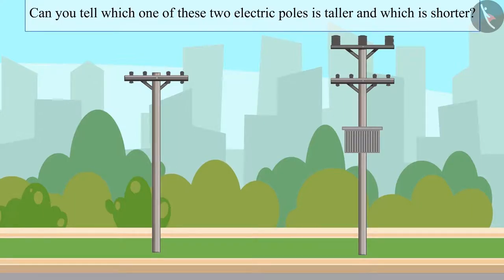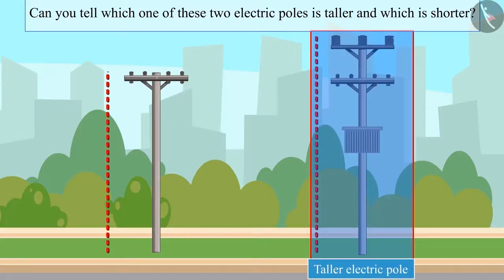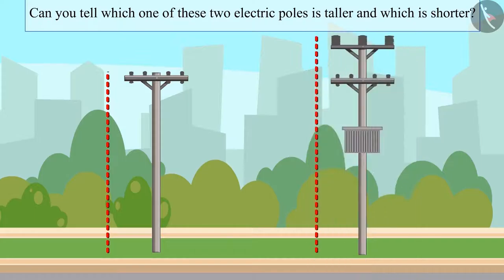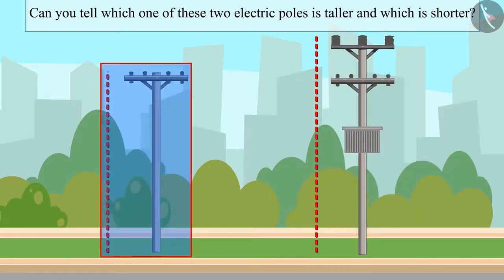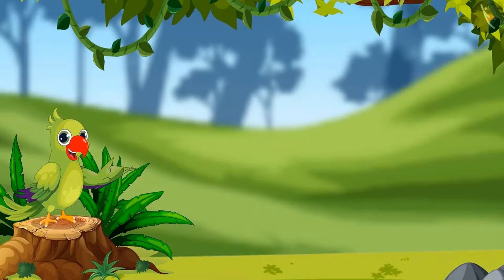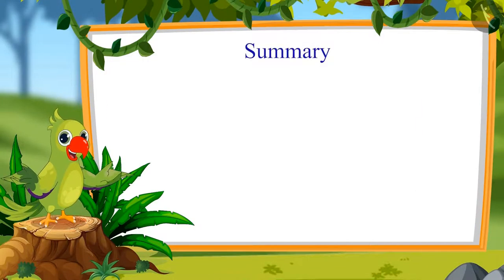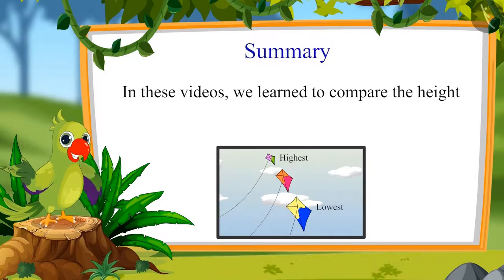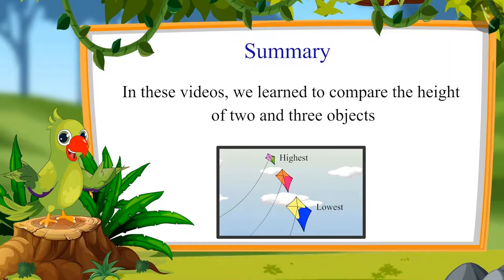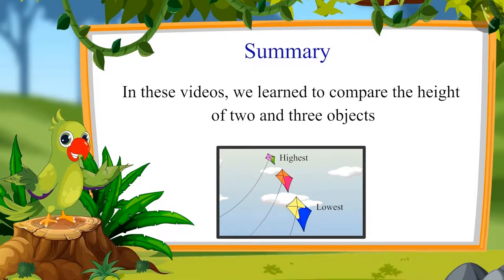After walking a little further, Chotu and Aarti saw two electric poles. So children, can you tell me which one of these two electric poles is taller and which one is shorter? Yes, this pole is taller and this one is the shorter one.